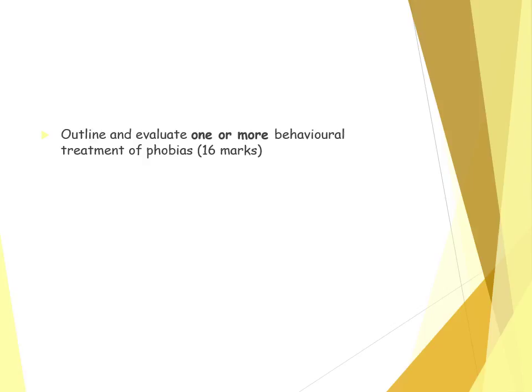For essay questions you might get: 'Outline and evaluate one or more behavioural treatments of phobias.' It's up to you whether you cover systematic desensitisation in detail or both treatments. If you do both, structure your essay with AO1 for systematic desensitisation — explain what it is and give examples — then AO3 evaluation with strengths and weaknesses. Then cover the AO1 of flooding, explaining what it is and how it works, followed by the evaluation of flooding.